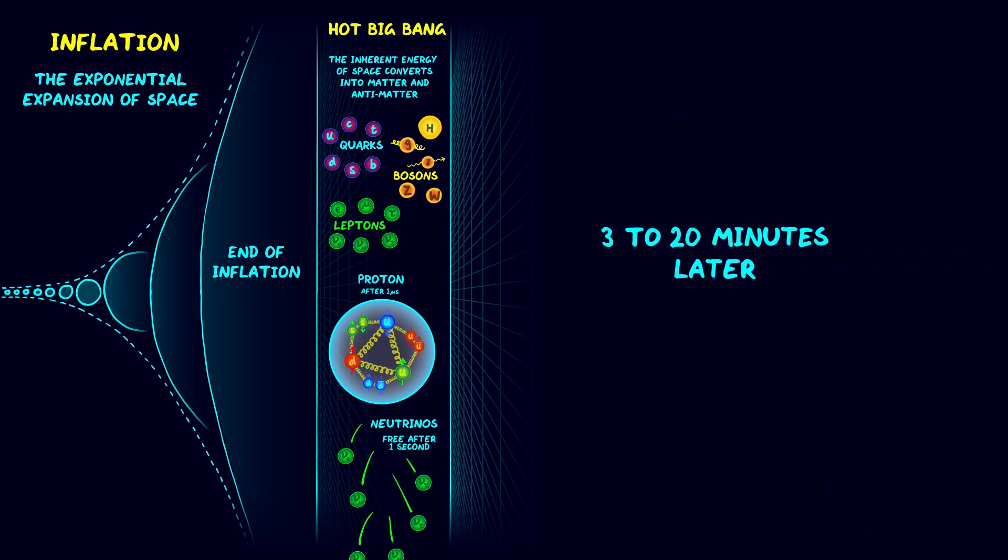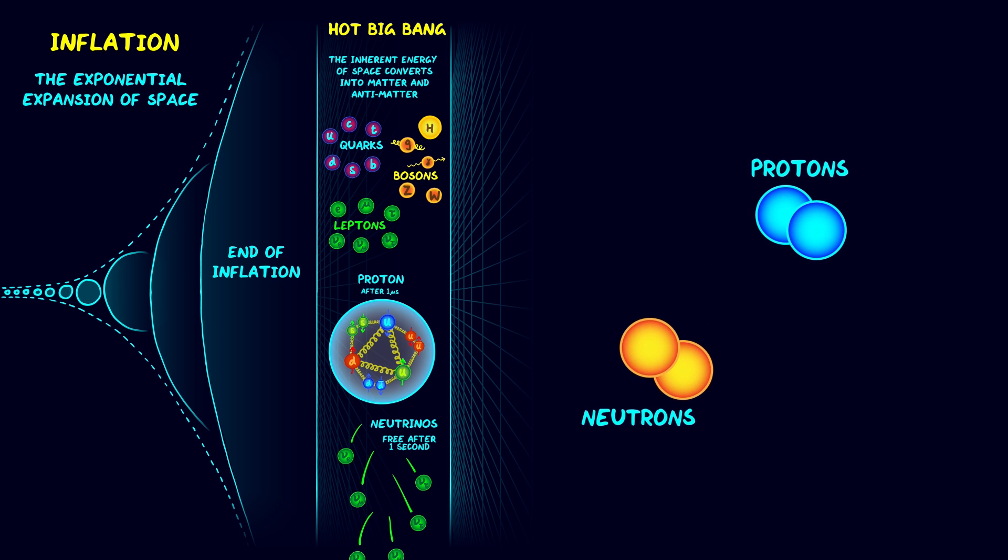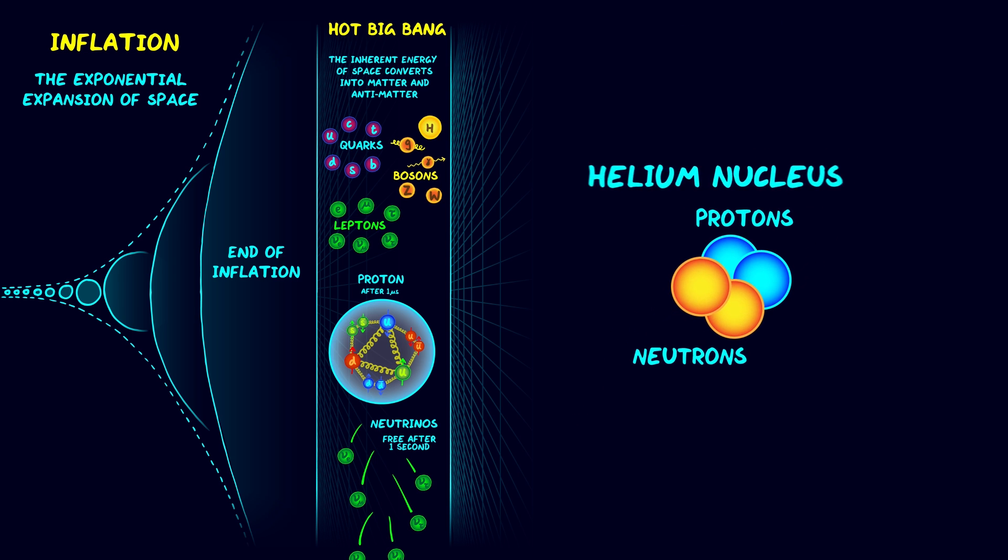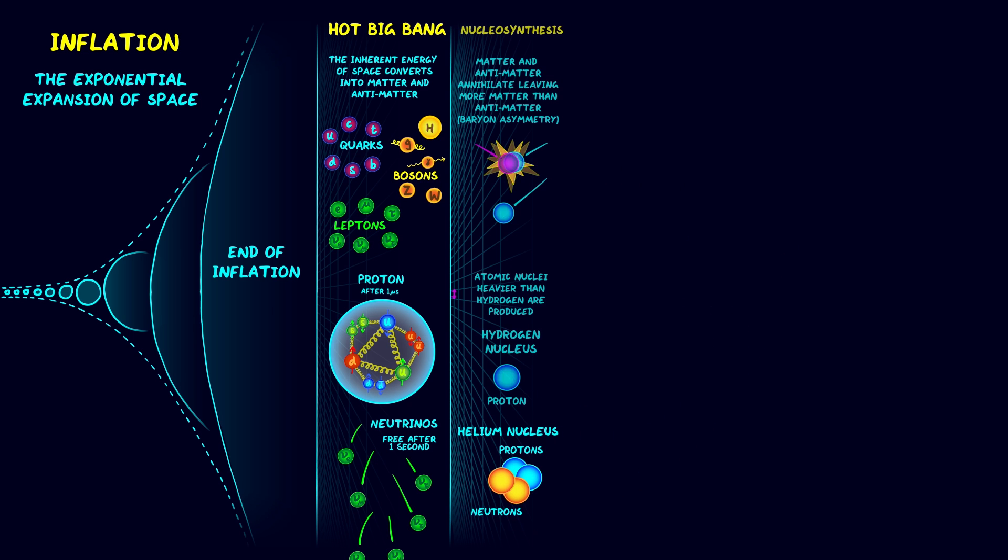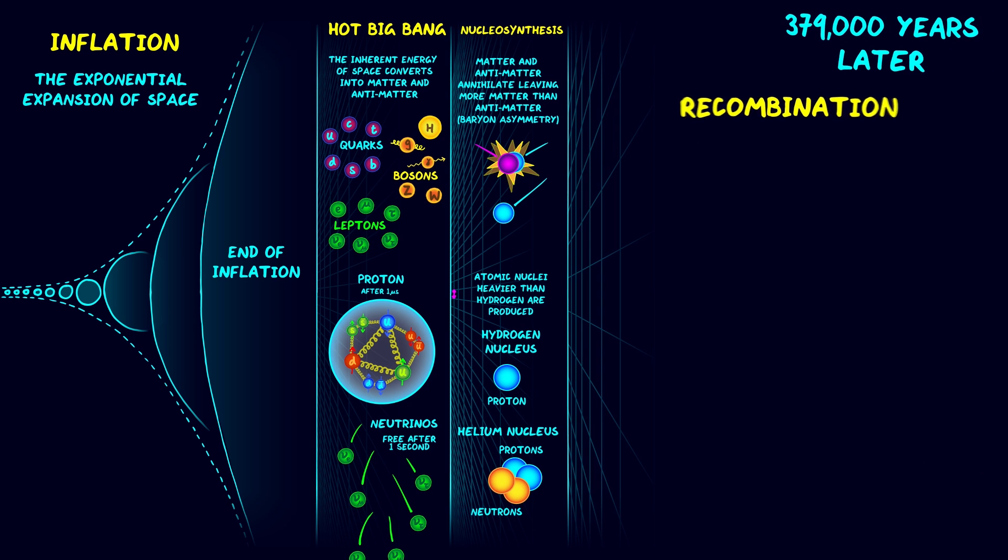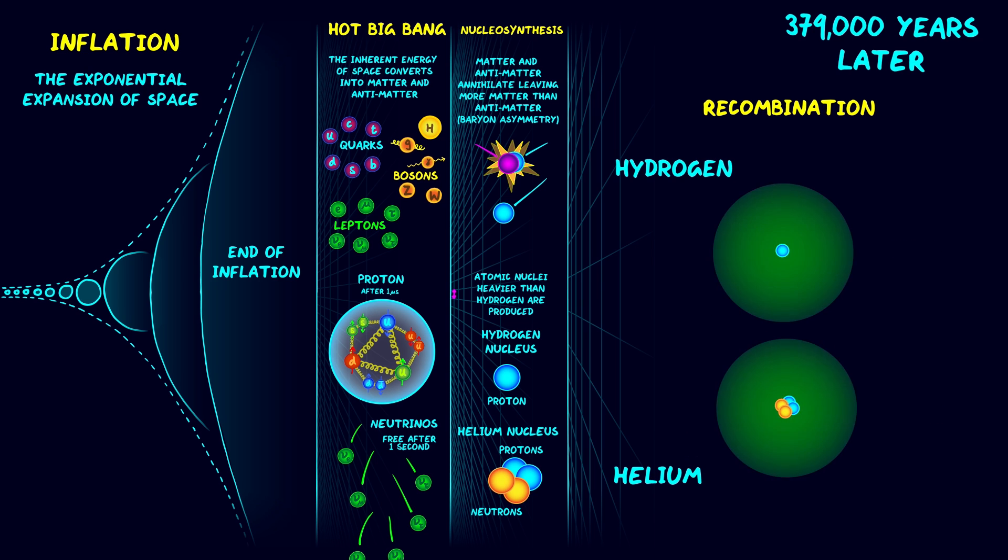Then, after a few minutes, matter and antimatter annihilated each other, mysteriously leaving behind some leftover matter. Then, protons and neutrons came together to form the first atomic nuclei of helium. Then, after about 379,000 years, we reached the end of the Hot Big Bang, when hydrogen and helium nuclei captured electrons forming the first stable atoms, and photons stopped interacting strongly with the other particles and flew free as well.